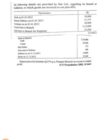Good evening students, welcome once again for my video lecture. In today's class we are going to discuss one more problem in branch accounts with cost plus price or invoice price model. The following details are provided of Star Limited regarding the branch at Kadalur, which sends the goods at invoice price — invoice at cost plus 60%. Please remember this cost plus 60%.